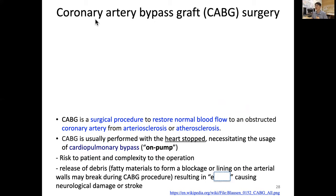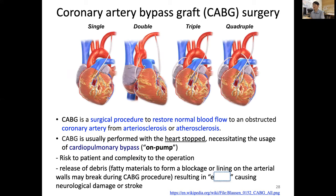This is called coronary artery bypass graft, or simply CABG. For example, a patient can require a single left coronary artery bypass with a downstream connection to the aorta — or a double, using both left and right coronary arteries. There can be triple or even quadruple bypasses. CABG is a surgical procedure to restore normal blood flow to an obstructed coronary artery caused by arteriosclerosis or atherosclerosis.